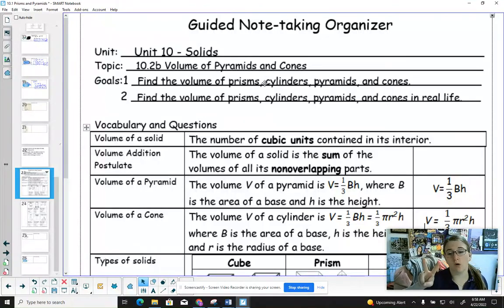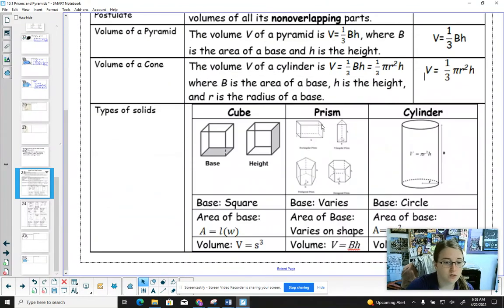Okay, 10.2b. So we're adding on two more volume formulas here. This will be volumes of pyramids and cones.